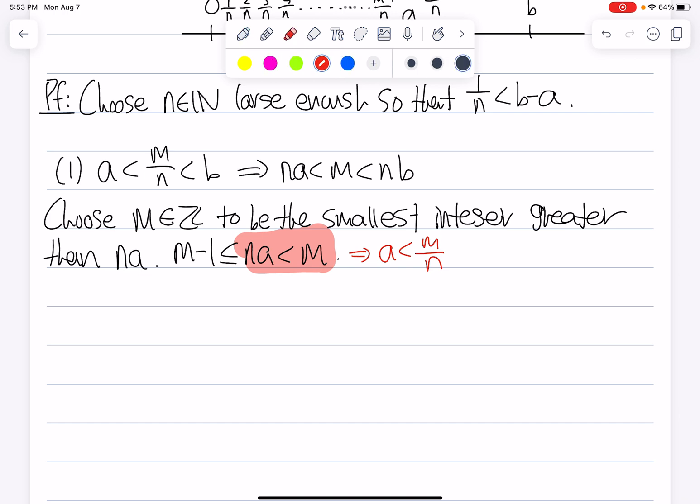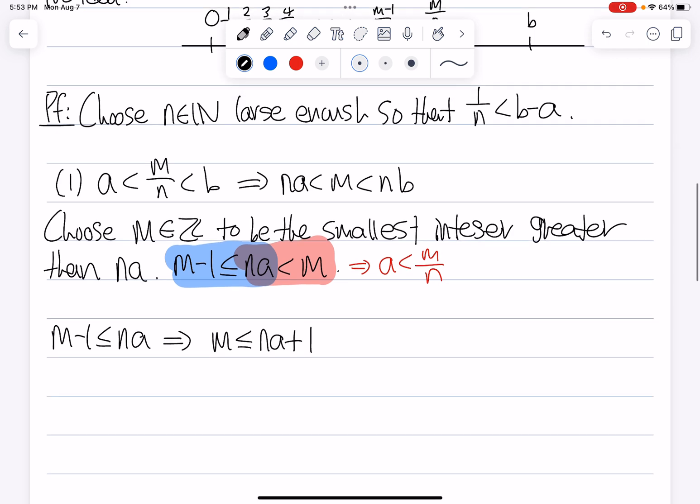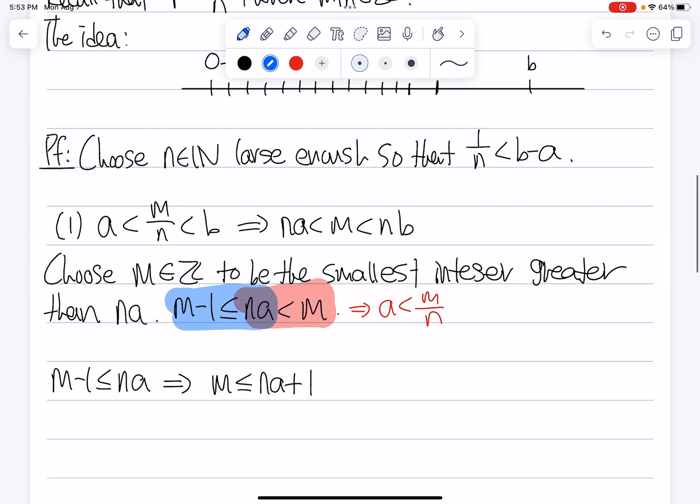But what about the other half? Consider this part of the inequality, this left hand. We know that M minus 1 less than or equal to NA, this is basically saying that M is less than or equal to NA plus 1. Then let's look at this inequality where we chose N to be 1 over N less than B minus A. If we just use simple algebraic manipulations, we get A less than B minus 1 over N. So let's apply this here.